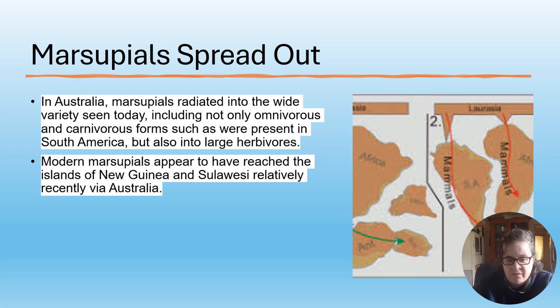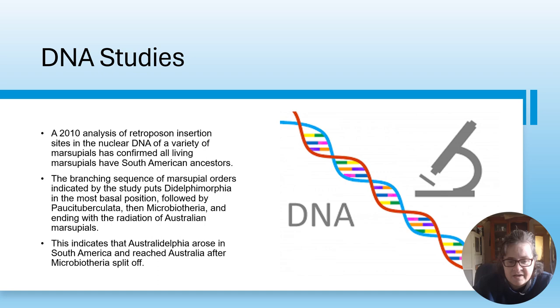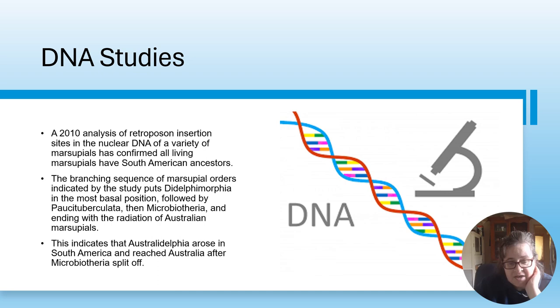In Australia, marsupials radiated into the wide variety seen today, including not only omnivorous and carnivorous forms but also large herbivores. Modern marsupials appear to have reached the islands of New Guinea and Sulawesi relatively recently via Australia. A 2010 analysis of retroposon insertions in nuclear DNA of a variety of marsupials confirmed all living marsupials have South American ancestors. The branching sequence puts Didelphimorphia in the most basal position, followed by Paucituberculata, then Microbiotheria, ending with the radiation of Australian marsupials.